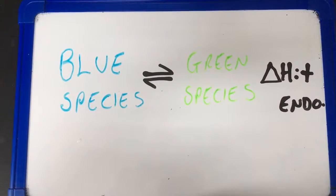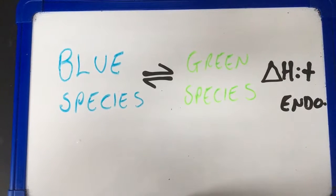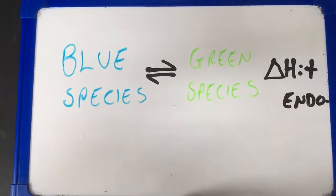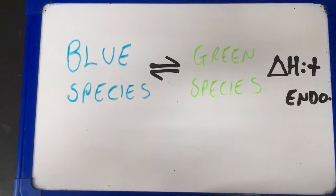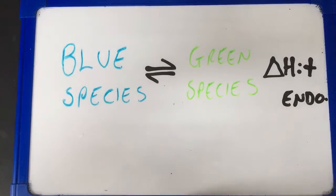In order to explain the color changes of the car, we should make a chemical equation in which on one side we have the blue species and on the other side the green species.